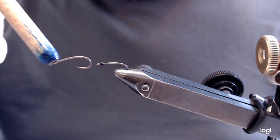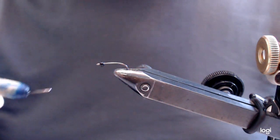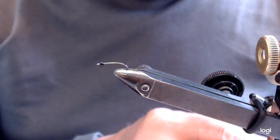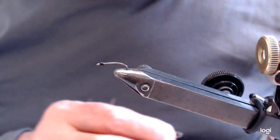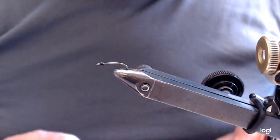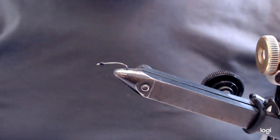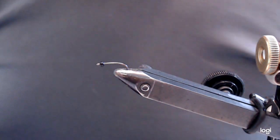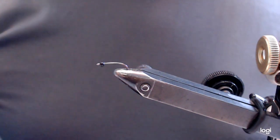That's a 2x sierra hook. I'm using a tungsten bead which is a 5/64th. It's an easy fly to tie and so effective.